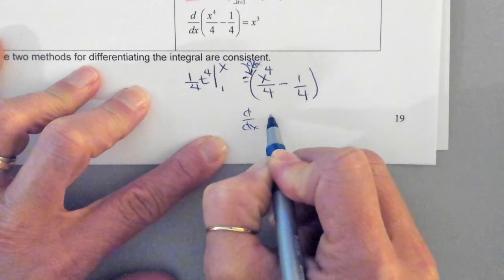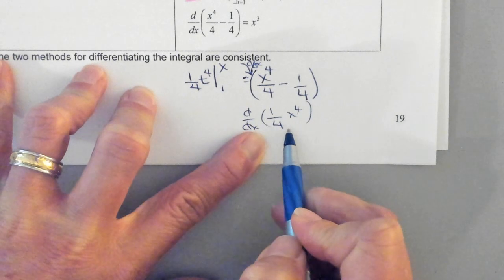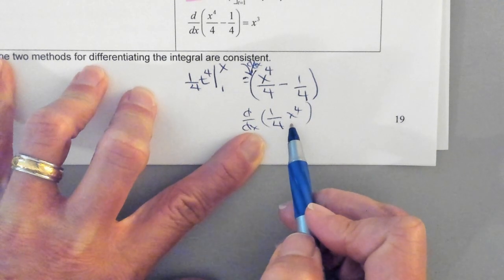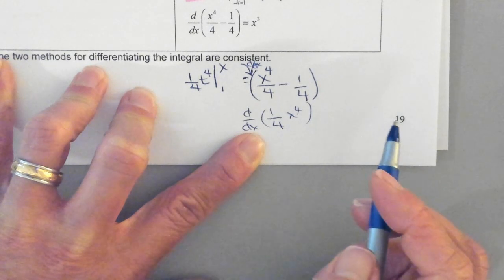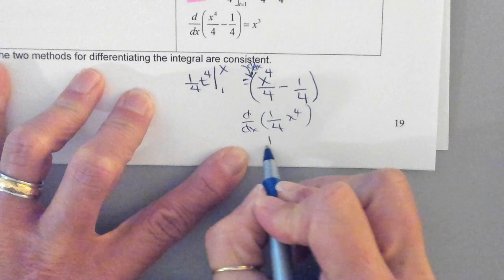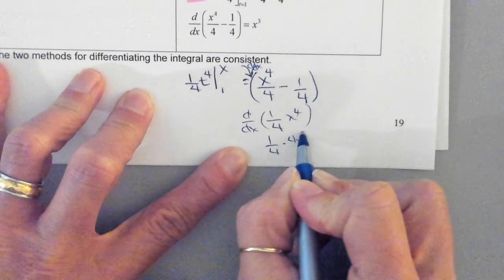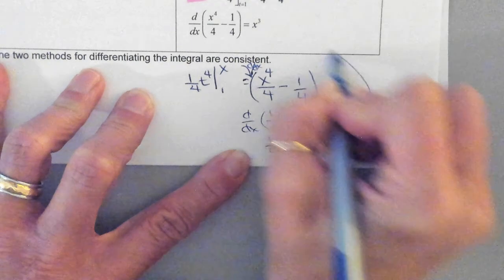Now I want to take the derivative of essentially d/dx of 1 fourth x to the fourth power. What's the derivative of x to the fourth? 4 x cubed. See, you got to think. I'm like, wait, do I add? Do I subtract? So this is 1 fourth times 4 x cubed, which is just x cubed. Do you guys see how they got their answer here? That's a lot of work.